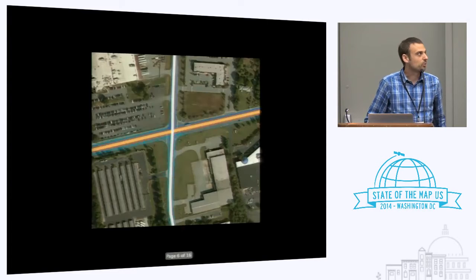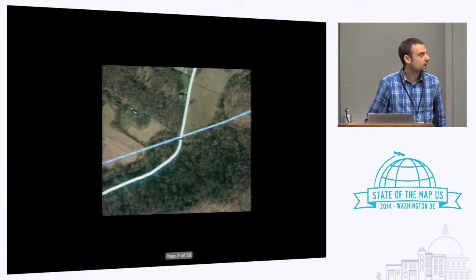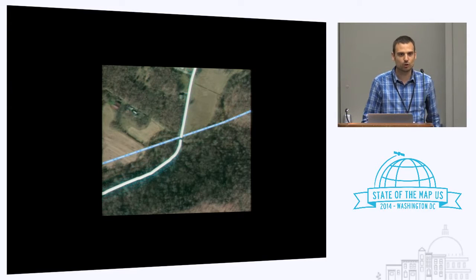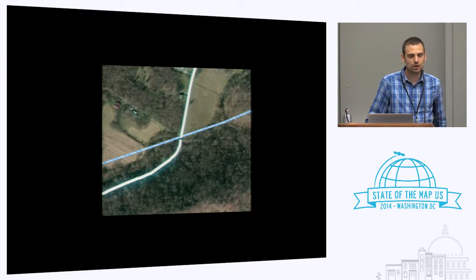So a couple of the common errors — you guys are probably familiar with this — ways that cross but don't create a node, and ways that are close but don't actually touch. These are errors that don't really show themselves in a tile layer or anything like that, but in routing they're kind of a big deal, and we get a lot of complaints from our users about it.